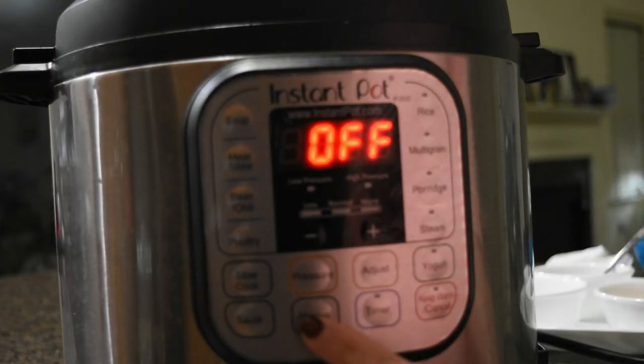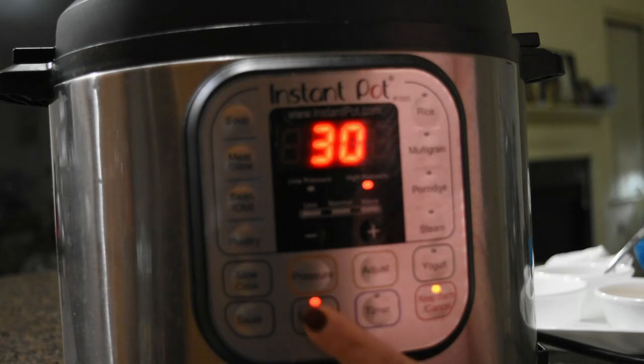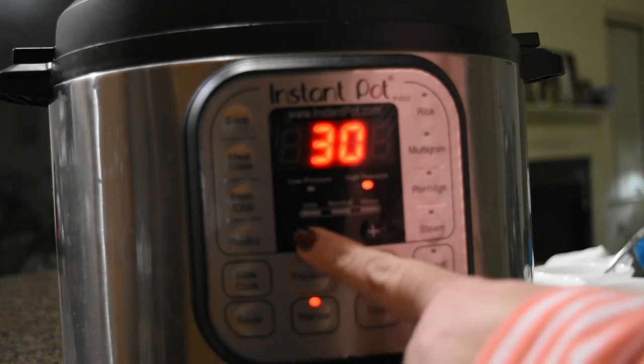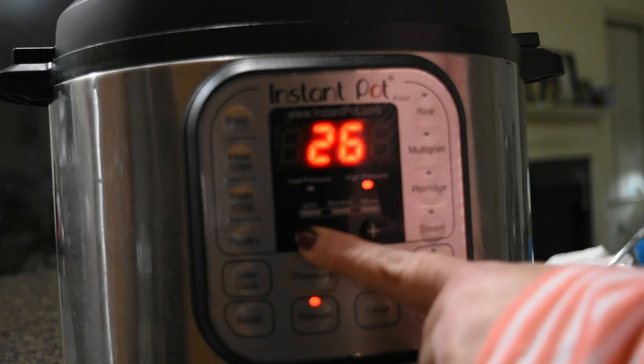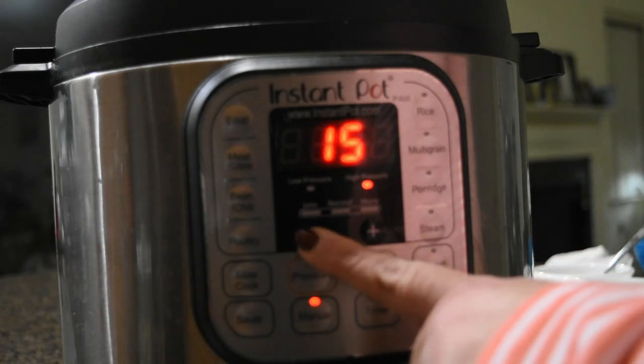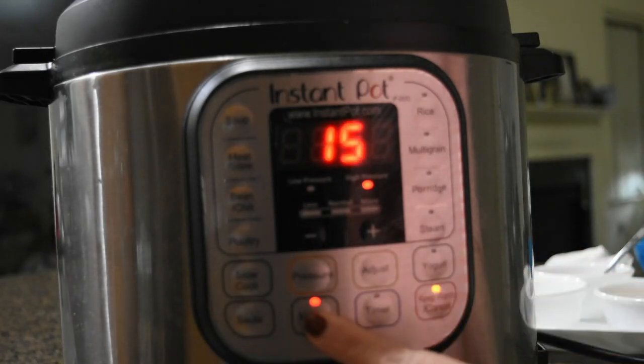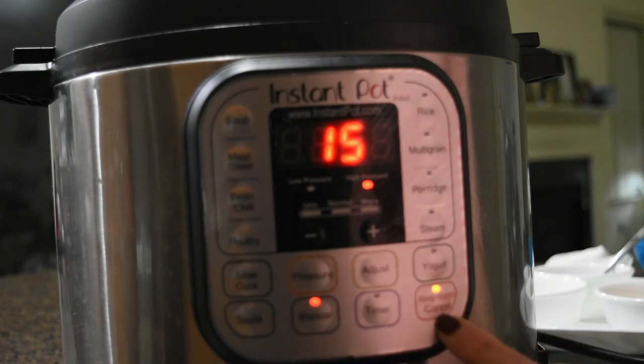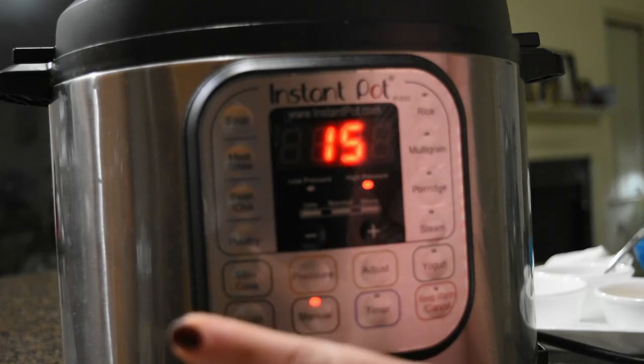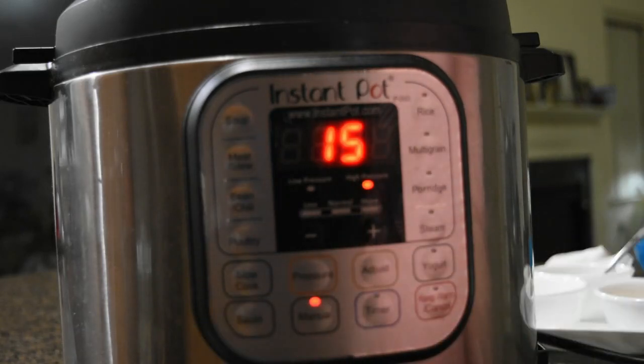So I am going to press manual mode. Now in few instant pot this manual mode is pressure cook mode. So manual mode and go down to 15 minutes. And press manual again so it will not go on keep warm or keep warm mode. So I am just going to press manual again and let's wait and watch.